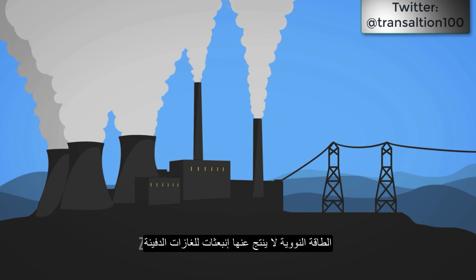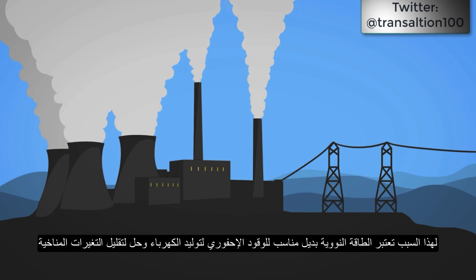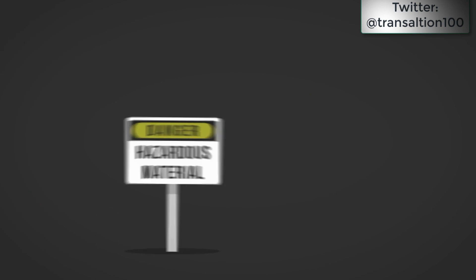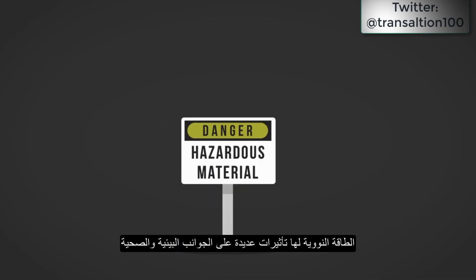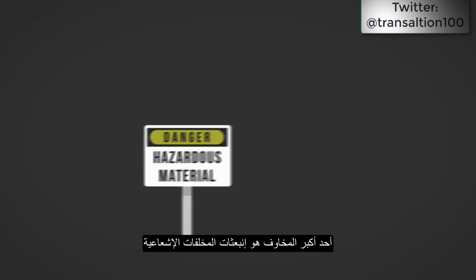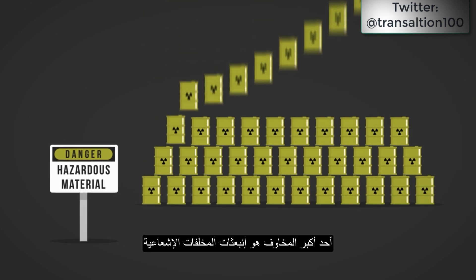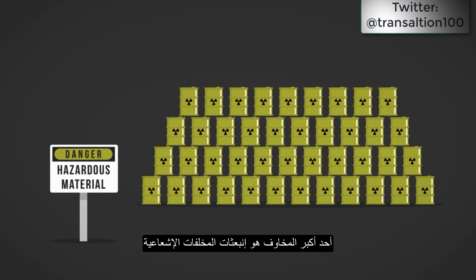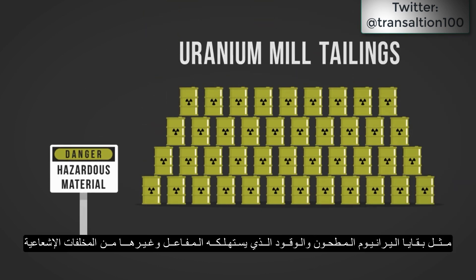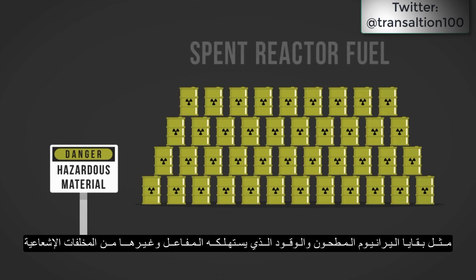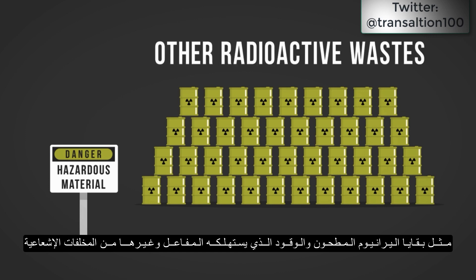Nuclear energy does not emit greenhouse gas emissions. For this reason, it is often seen as a substitute for fossil fuel electricity and a solution for mitigating climate change. However, nuclear power holds a wide variety of environmental and health issues. The largest concern is the generation of radioactive wastes such as uranium mill tailings, spent reactor fuel, and other radioactive wastes.